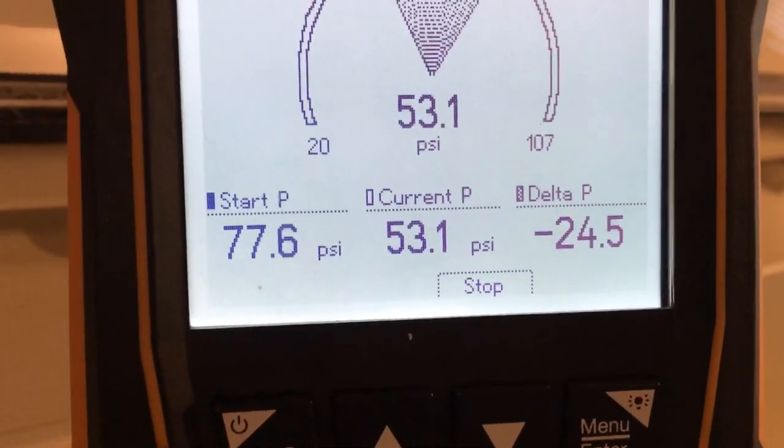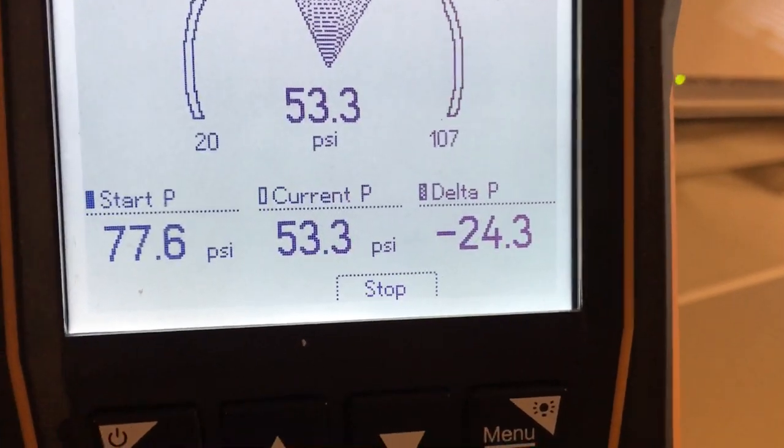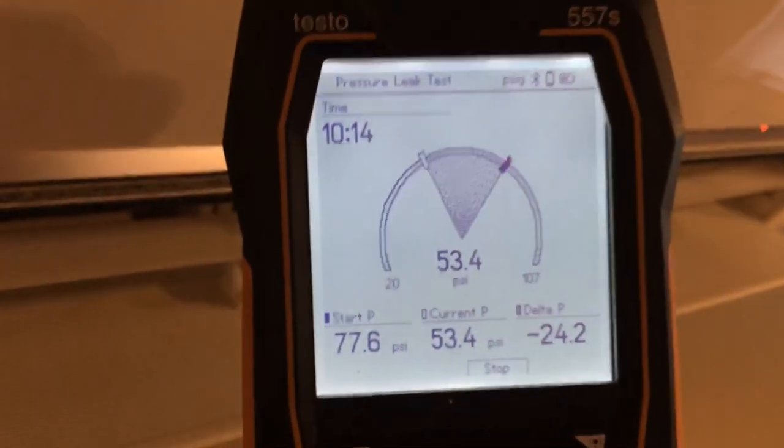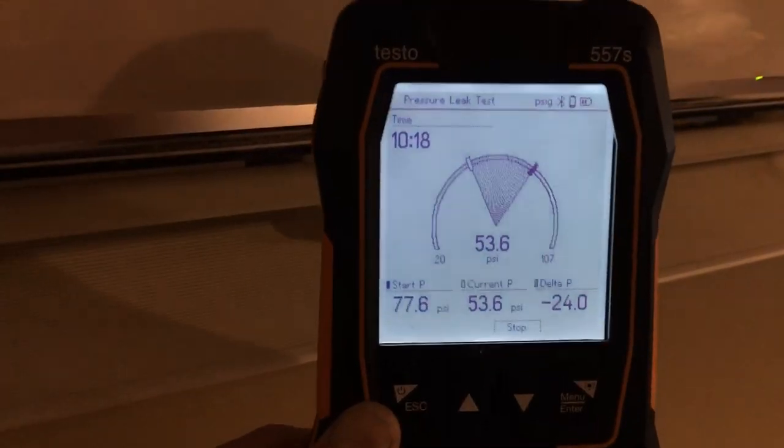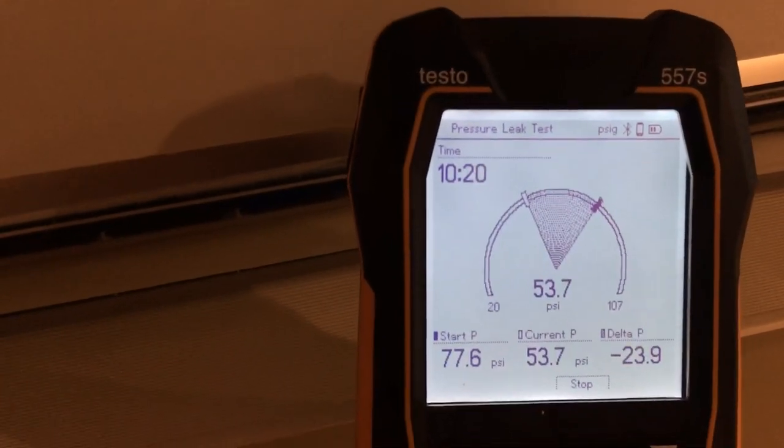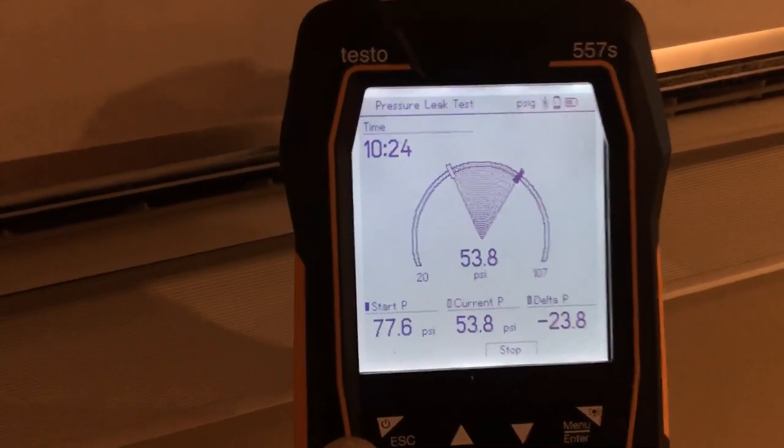I'm currently at 53. So it has dropped 24 PSI right now. So if you were performing a pressure test with refrigerant inside your gauges and the temperature went down, you would think there's a leak, but there's no leak.